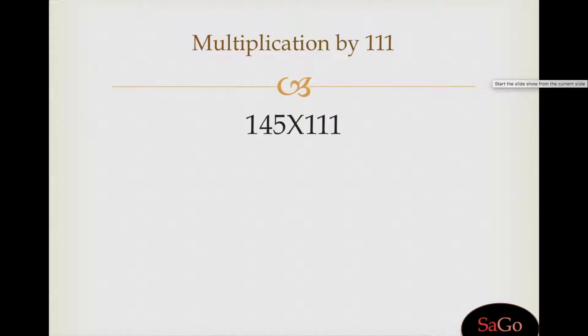In this video we'll see how to multiply any digit by 111. The sum we have is 145 multiply by 111. Write 145 as it is, put two zeros on both sides of 145.